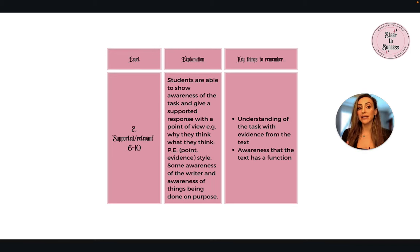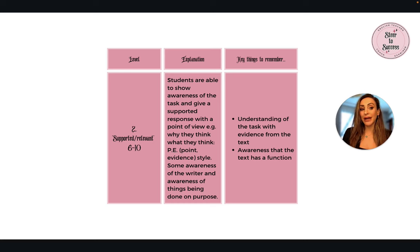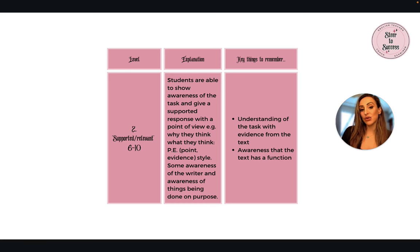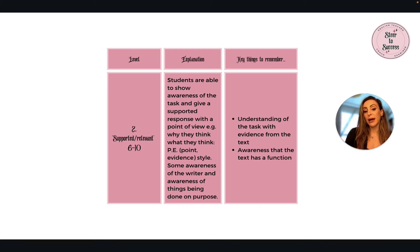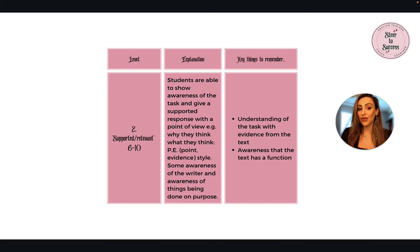Now onto level two. As we go up the levels, there's more information because more is required of you. Level two, which is marks six to ten — roughly equating to around grade two or three — students are able to show awareness of the task and give a supported response with a point of view, i.e. why they think what they think. That's a points-and-evidence style with some awareness of the writer and awareness of things being done on purpose. Key things to remember: understanding the task with evidence from the text and awareness that the text has a function.